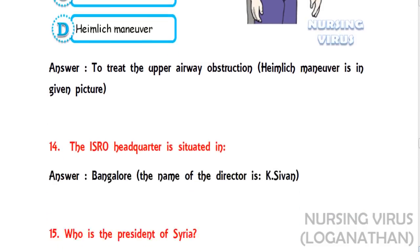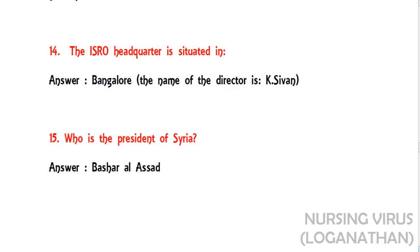The fourteenth question: where is the ESRO headquarters situated? The answer is Bangalore, and the name of the director is K7. The fifteenth question: who is the president of Syria? The answer is Bashar al-Assad.